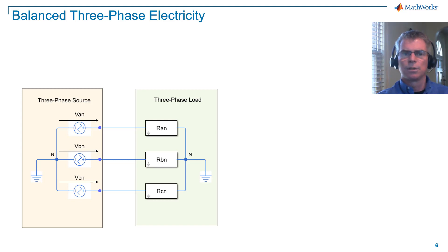Notice the neutral points at the source and load, which are connected to ground. The phase voltages are measured across the voltage sources, from the terminal point of the source to the neutral point. The resistors are of equal value in this case.